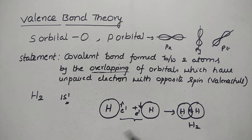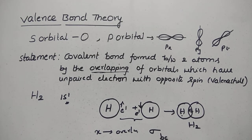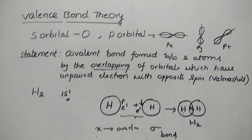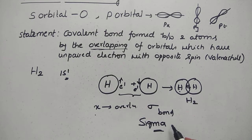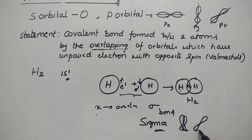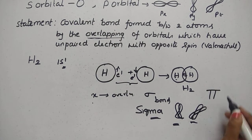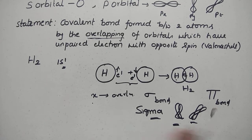When any molecule is formed with multiple bonds, first the head-on X-axis overlap occurs — this is the sigma bond, which is the strongest bond because the overlapping is direct and stronger. When there is side overlapping of orbitals, the bond formed is a pi bond, which is weaker than the sigma bond.